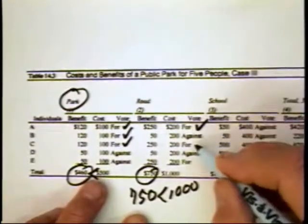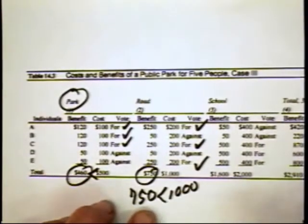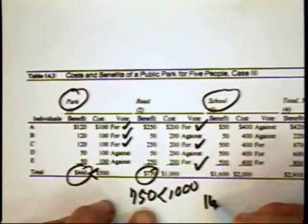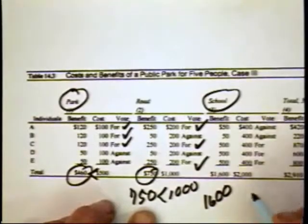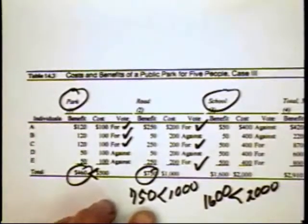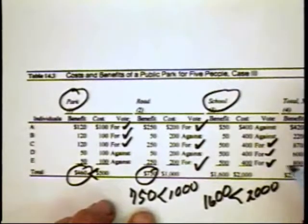Again, we have three people voting for the road, and we take on another project that costs more than its collective benefits. A school — the values here are $1,600 versus $2,000 in terms of cost. Again, the benefits are less than the cost, but yet because of the distribution of those costs and taxes and benefits, we get a majority rule in favor of each project.